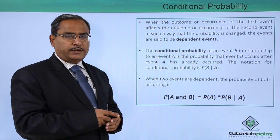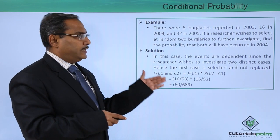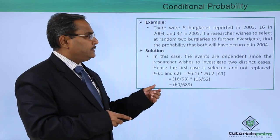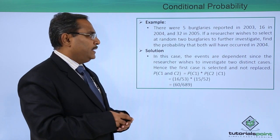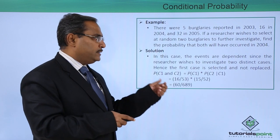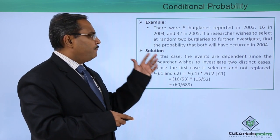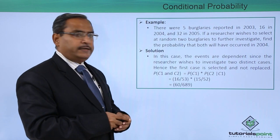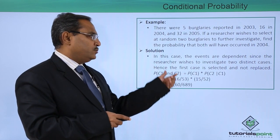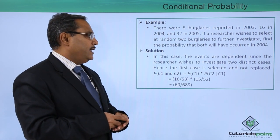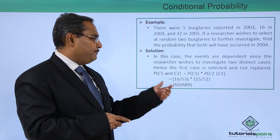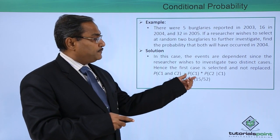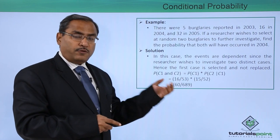Let us go for a better understanding through an example. There were 5 burglaries reported in 2003, 16 in 2004, and 32 in 2005. If a researcher wishes to select at random two burglaries for further investigation, find the probability that both will be from the same year, that is 2004. The events are dependent since the researcher wishes to investigate two distinct cases; hence the first case is selected and not replaced. So, probability of C1 and C2 equals probability of C1 into probability of C2 given C1.